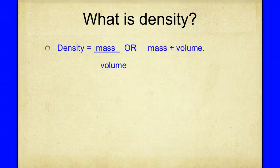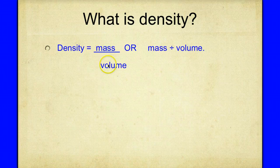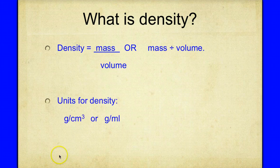Now let's talk about the formula for density. Density is the amount of mass in a given volume, so to calculate density we take mass and divide it by volume. Our formula is: density equals mass divided by volume, or mass over volume.